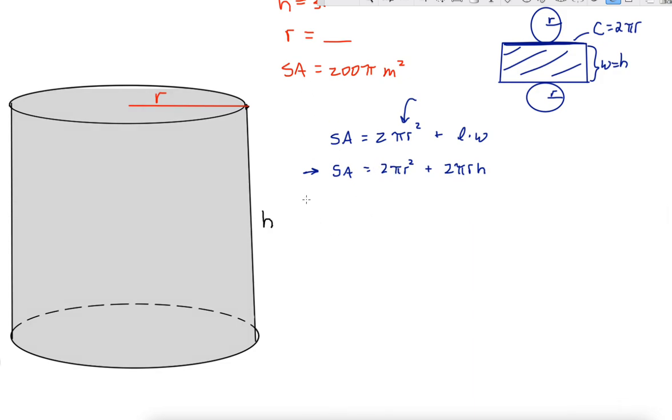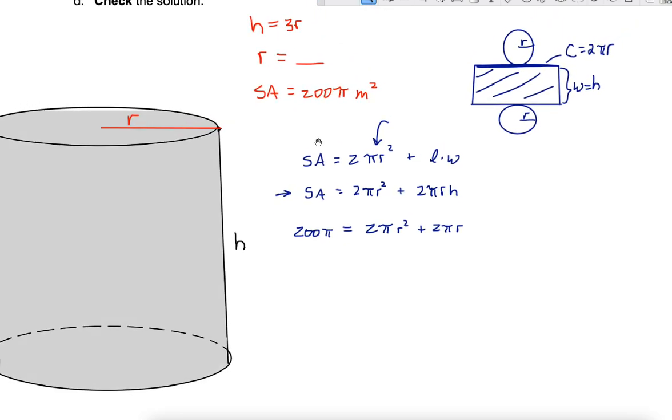And now we're just going to substitute everything that we know. 200π, don't forget your π. 2π times r squared, we don't know r, plus 2πr. Now h, we have an expression we can put in for h, we know that it is 3 times r, so 3r.